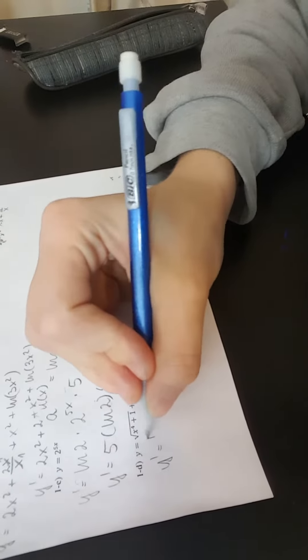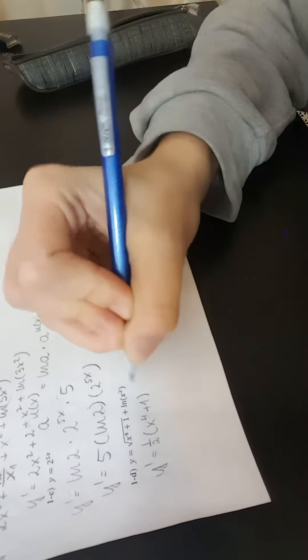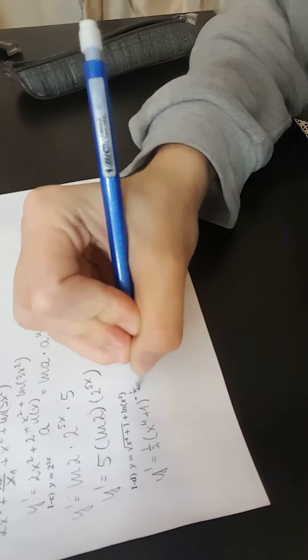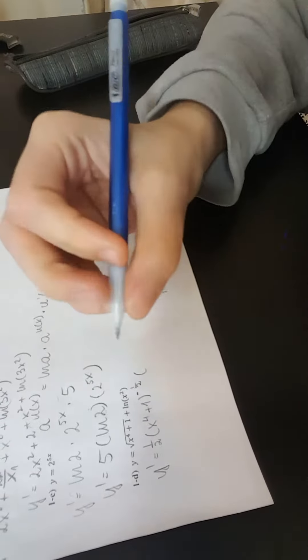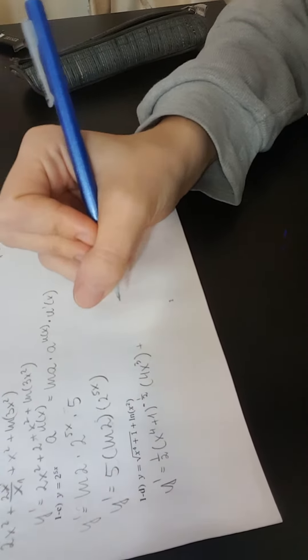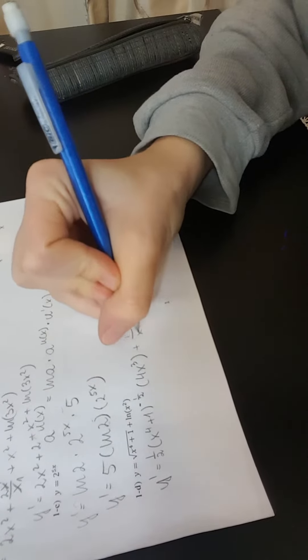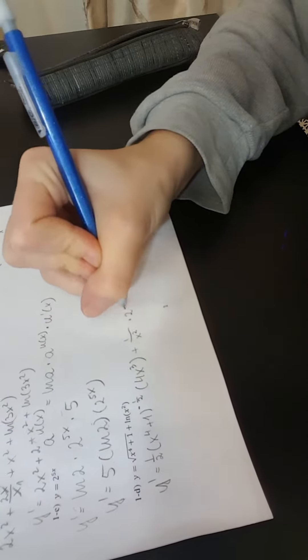So we're going to do first, we got the one half x to the fourth plus one to the negative one half times what is inside, so inside is 4x to the third, and plus derivative of natural log is 1 over x, so in this case going to be 1 over x squared times 2x.